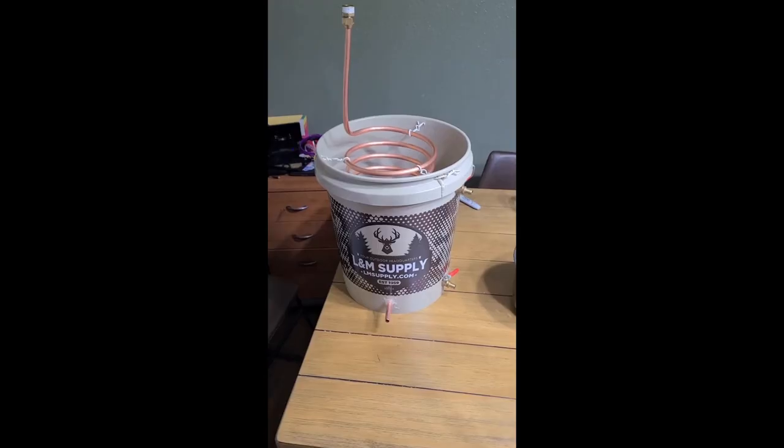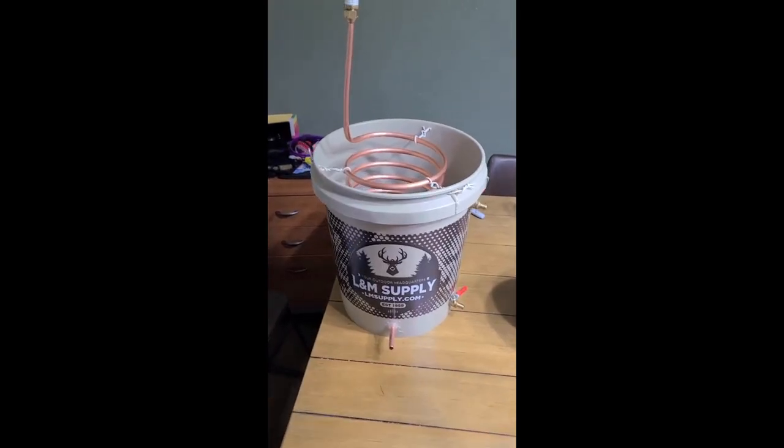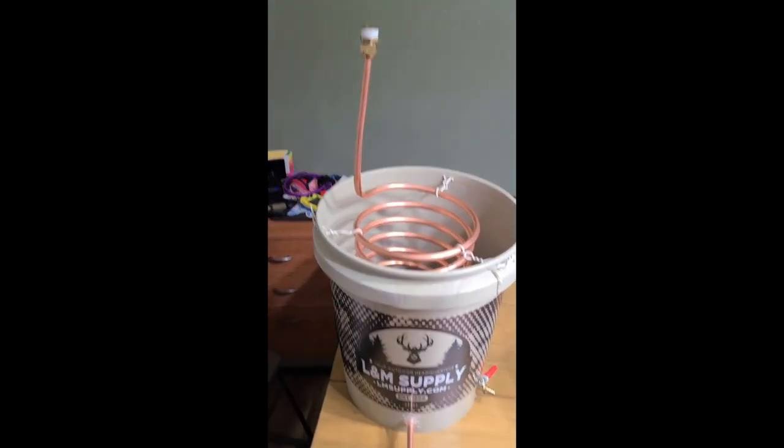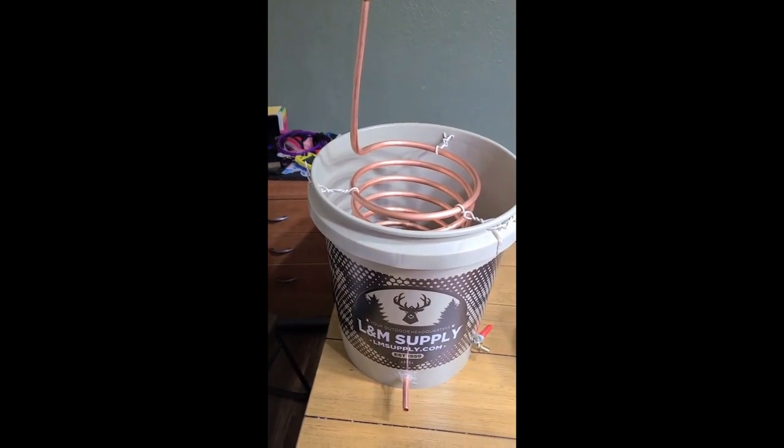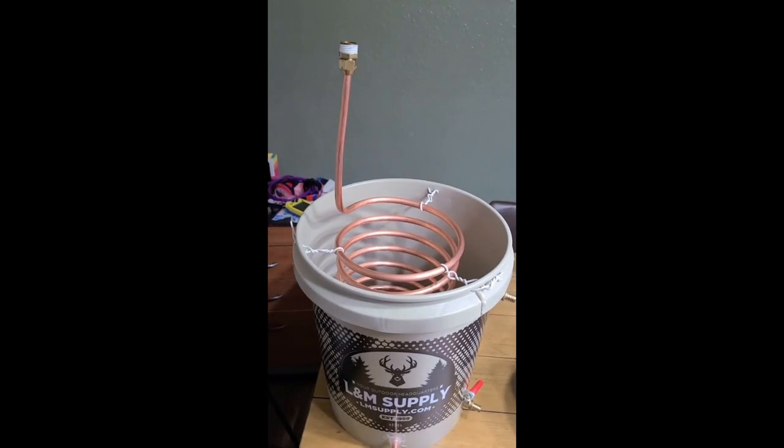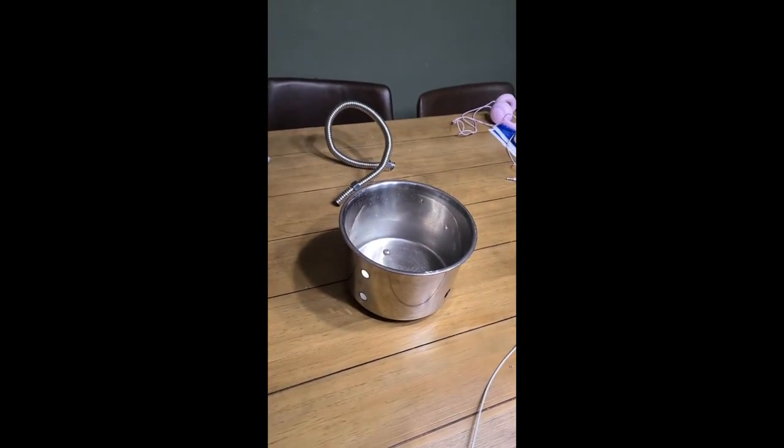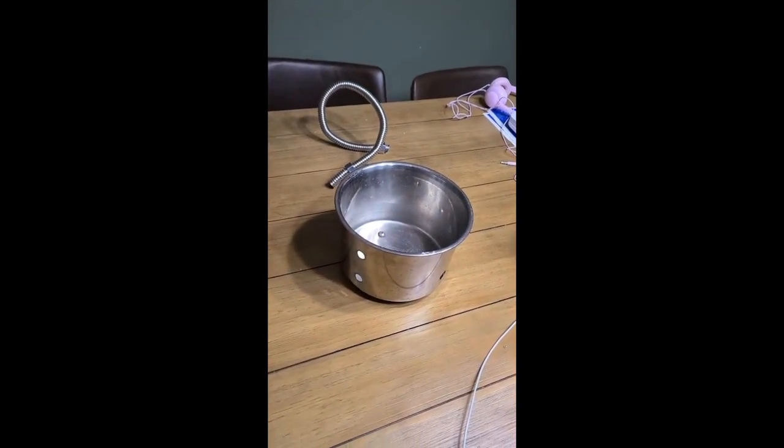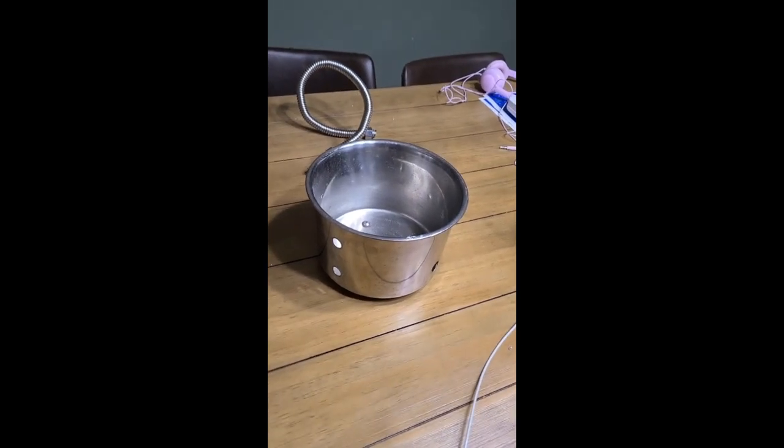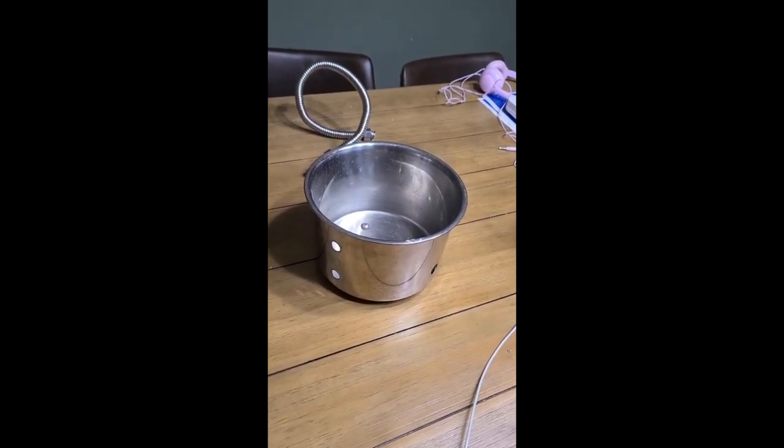There you have the completed condenser. That is 20 feet of copper coil in there, three-eighths OD, as opposed to that one there. It's still the same size copper but that had nine feet of coil in it.